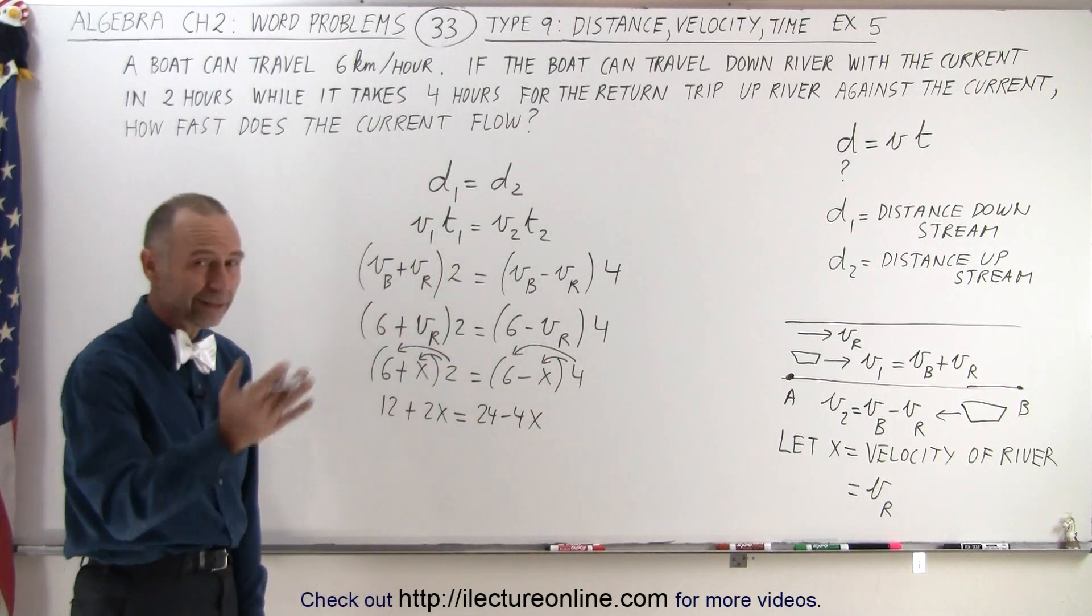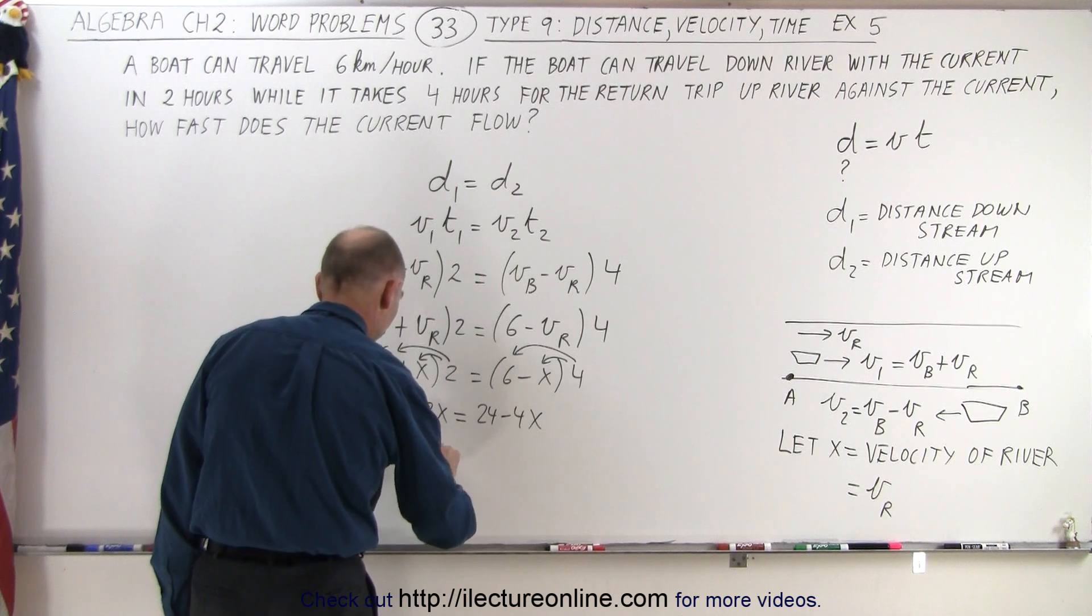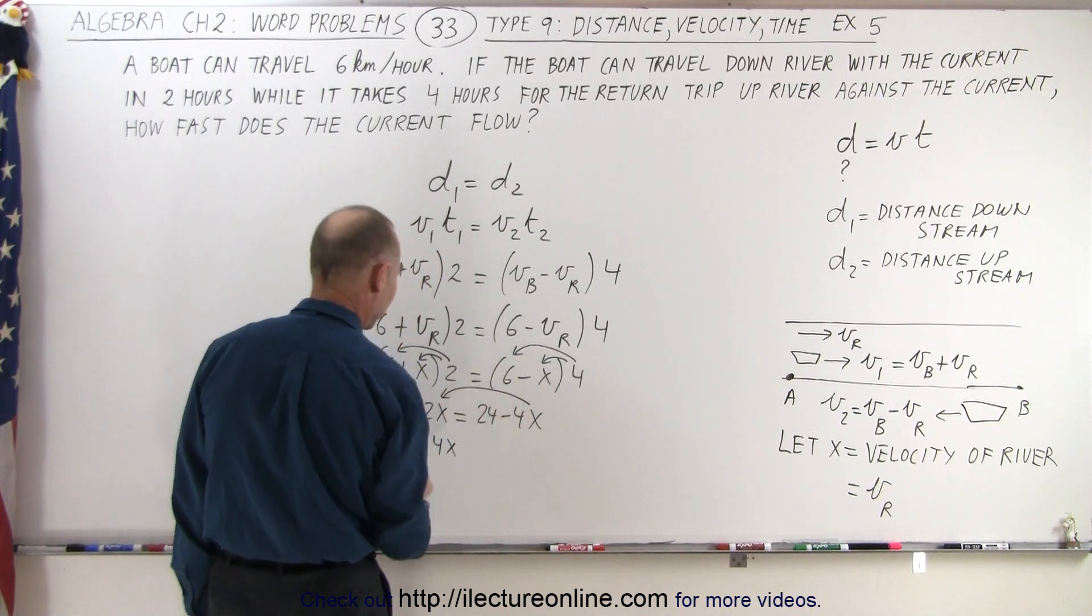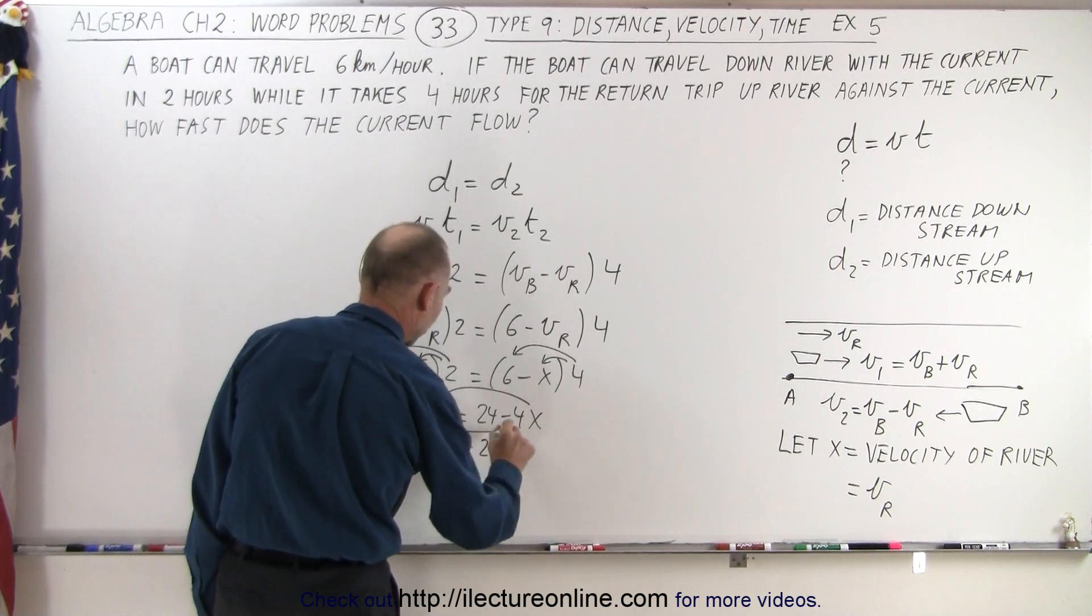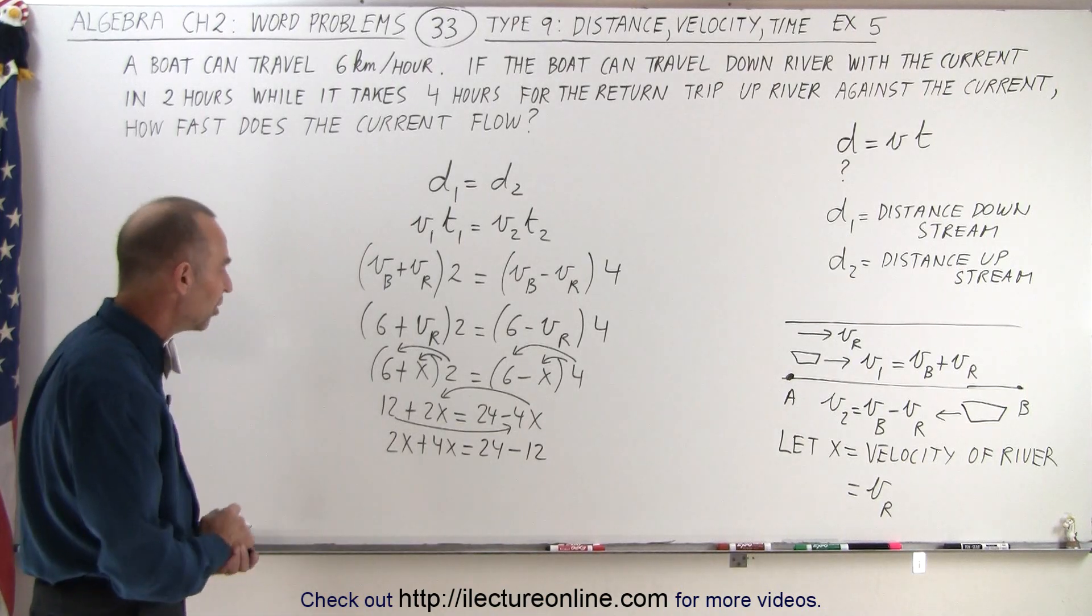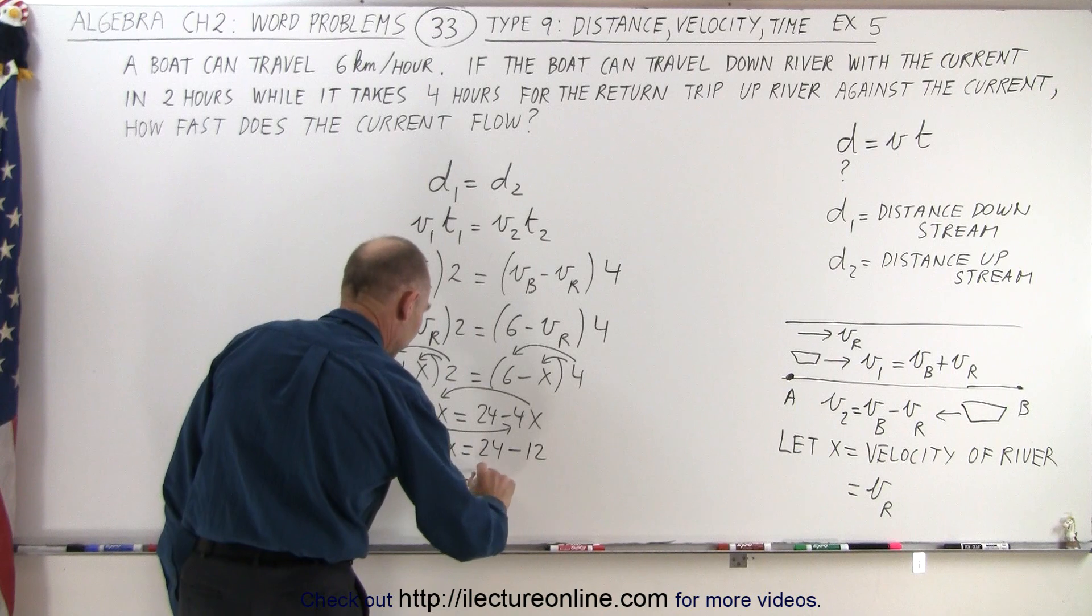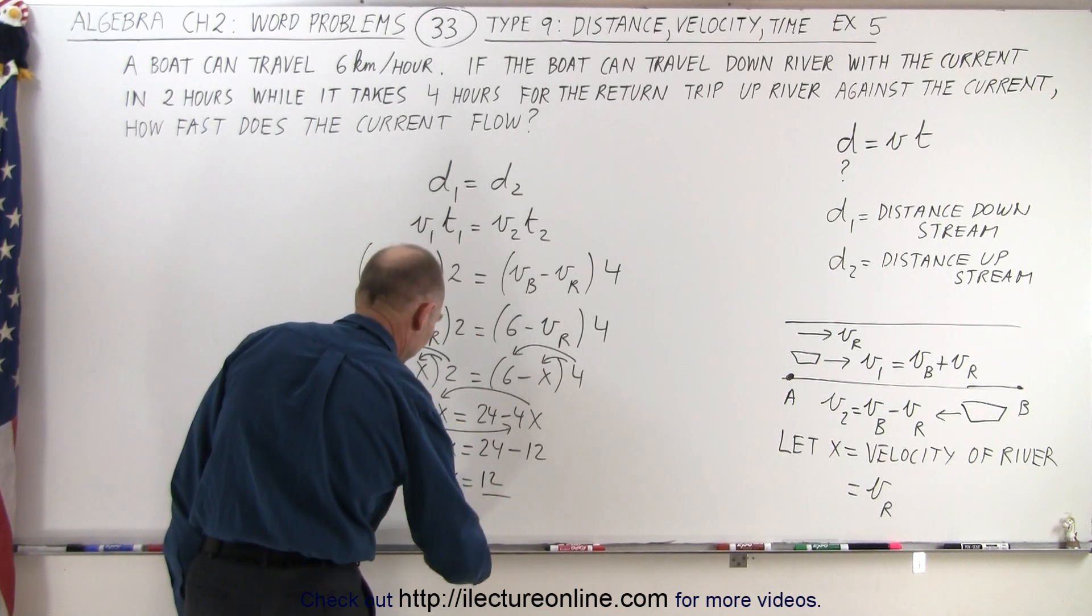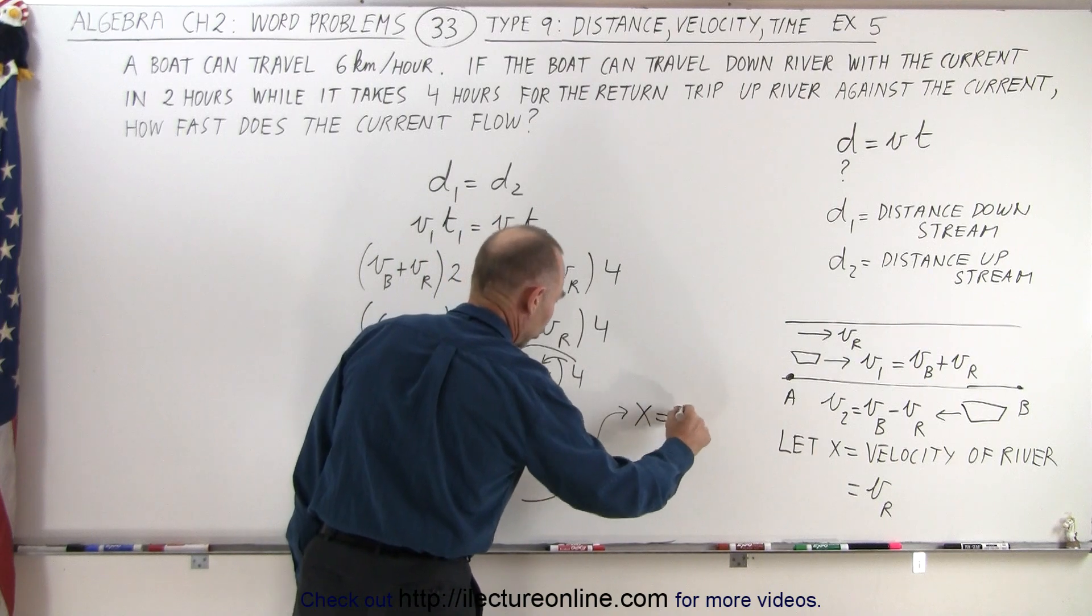We want all the x's to one side, all the numbers to the other side. So 2x plus 4x, because when we bring the 4x to the left, that becomes a plus 4x, equals 24. Bring the 12 to the right, that becomes a minus 12. So when we cross the equal sign, we change the sign. Here we get 6x equals 12. Divide both sides by 6, and that means that x equals 2.